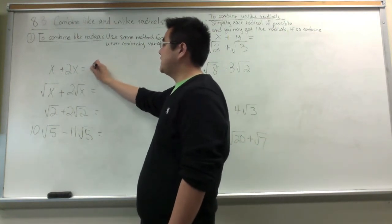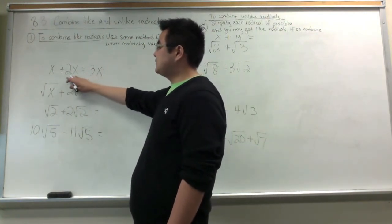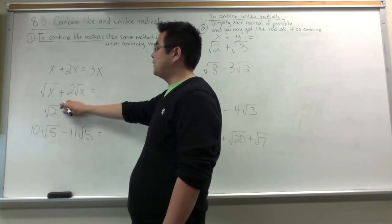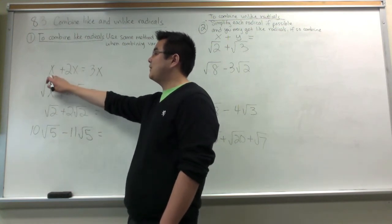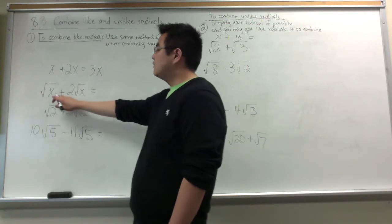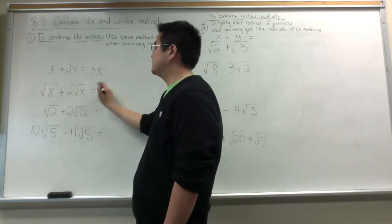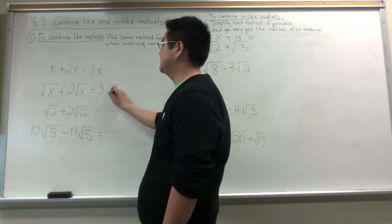For example, x plus 2x is 3x. If you notice the difference between this example and this example, all I've done was I've changed the variable x to a root x. So it's the same thing. Root x plus 2 root x would be 3 root x.